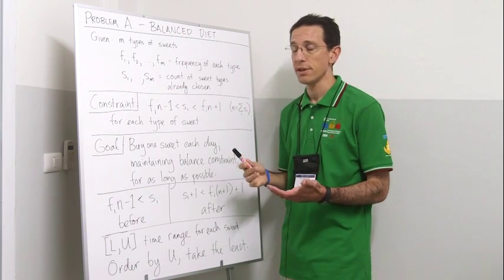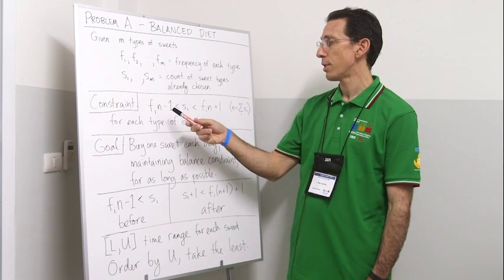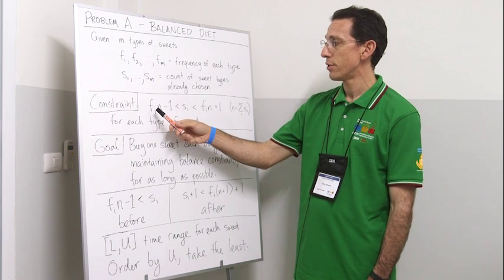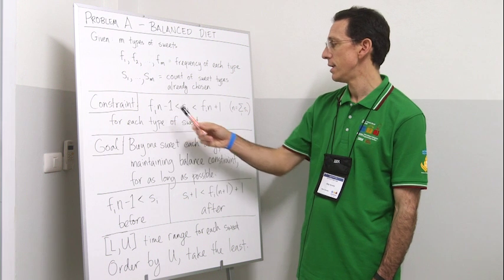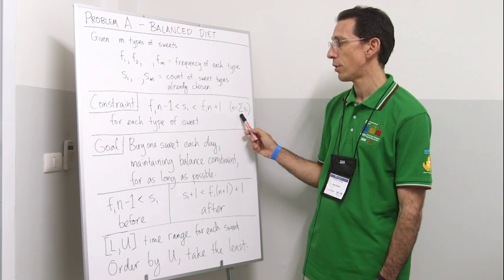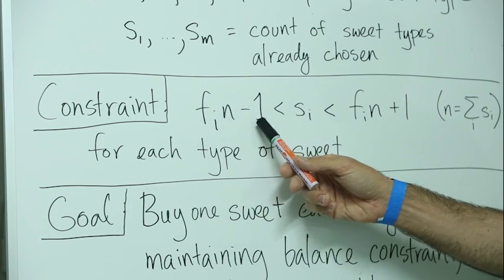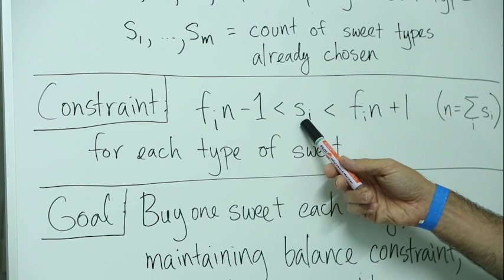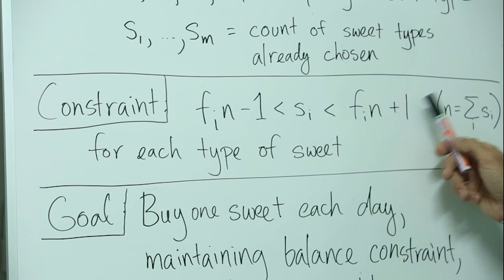This notion of balance is maintained in this constraint. The constraint is expressed as: for each sweet type, there is the desired frequency times the number of sweets already eaten. So N is the sum of all the sweets that have been consumed already. F_i times N minus one must lower bound S_i, the number of sweets of type i that have been eaten, and it must be upper bounded by F times N plus one.